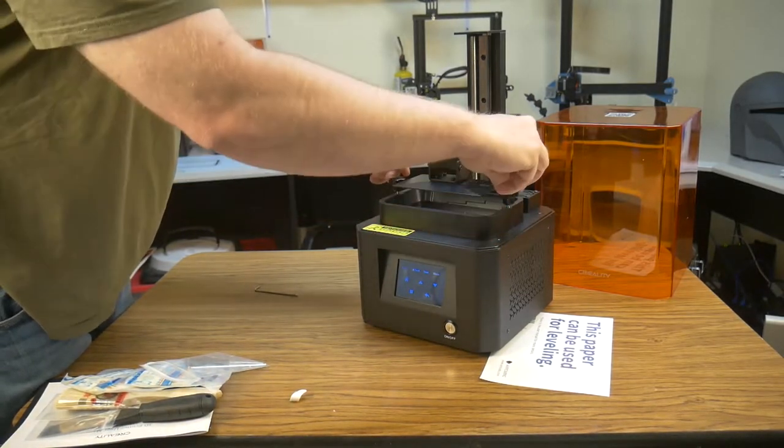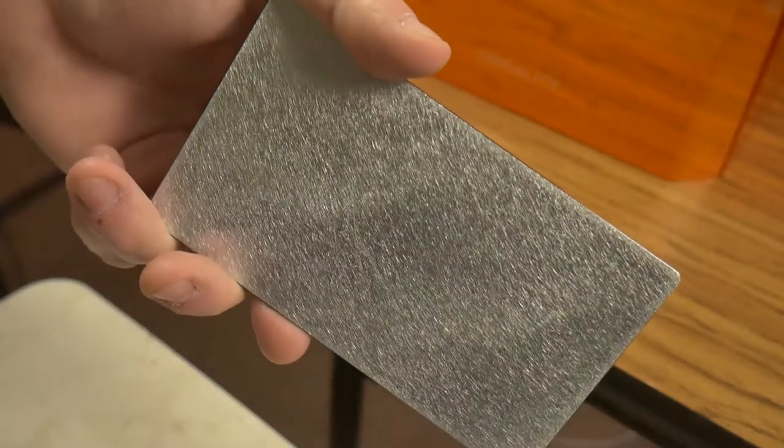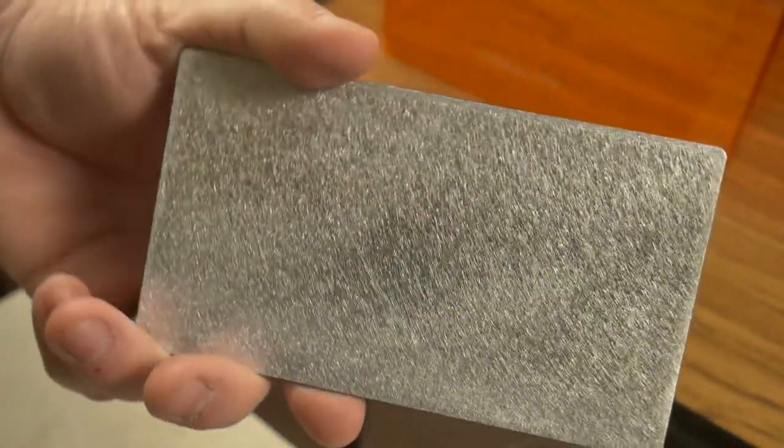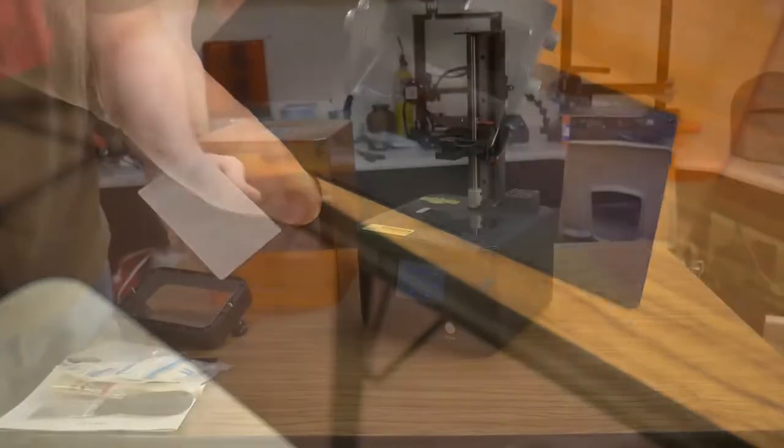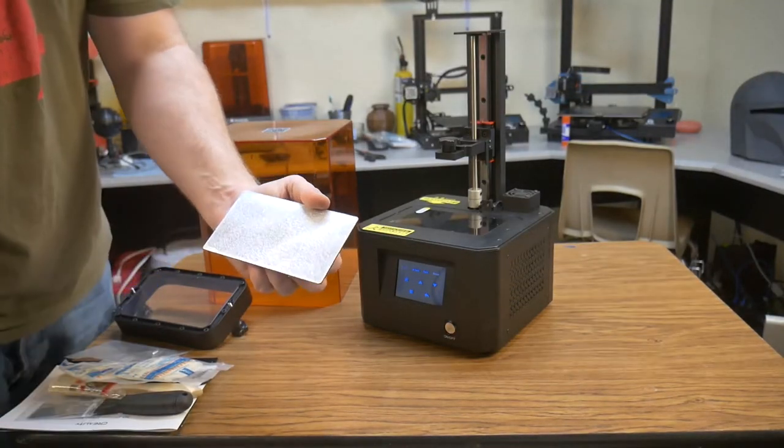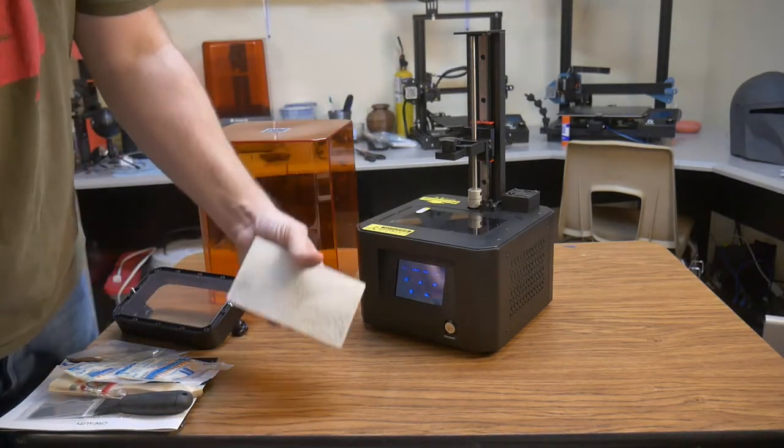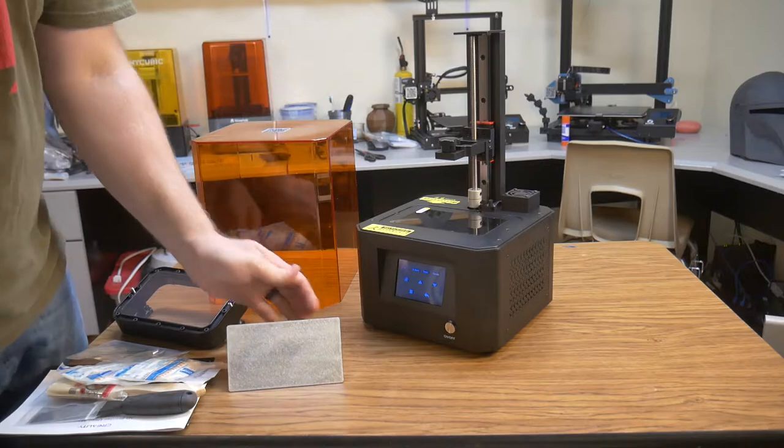Here are some things I noticed while I was setting up the printer. The build plate surface was very sticky. I'm not sure if that is done on purpose or if it is some leftover residue from manufacturing. It has a really nice distressed surface that should help with print adhesion. A little alcohol cleaned the surface of the build plate right up.